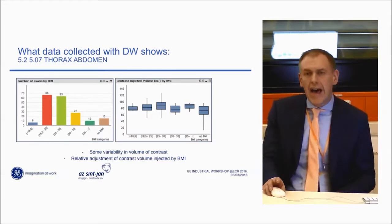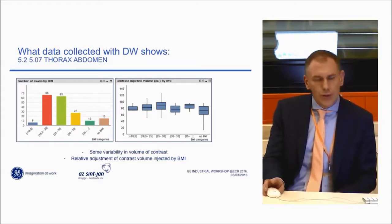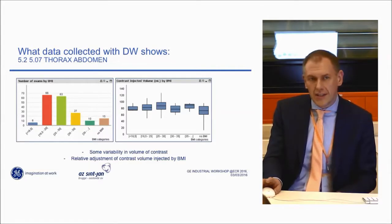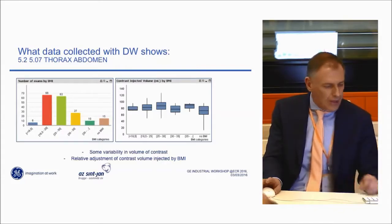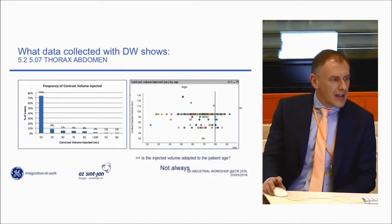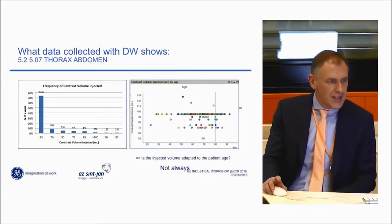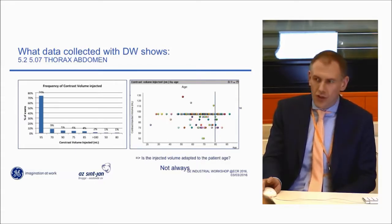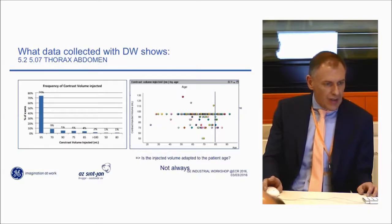When we look at the average volume of contrast injected, the first three BMI groups show a logical trend — it goes up with BMI. But then something strange happens: for very high BMI patients, the average injected volume goes down again, which doesn't really make sense. Looking at the percentage of injected protocols, in 74% of cases the house rule of 95 ml is injected. 24% of patients get a lower volume, and only 2% get a higher volume — which may not be logical, as we should consider giving more contrast to the high BMI group.